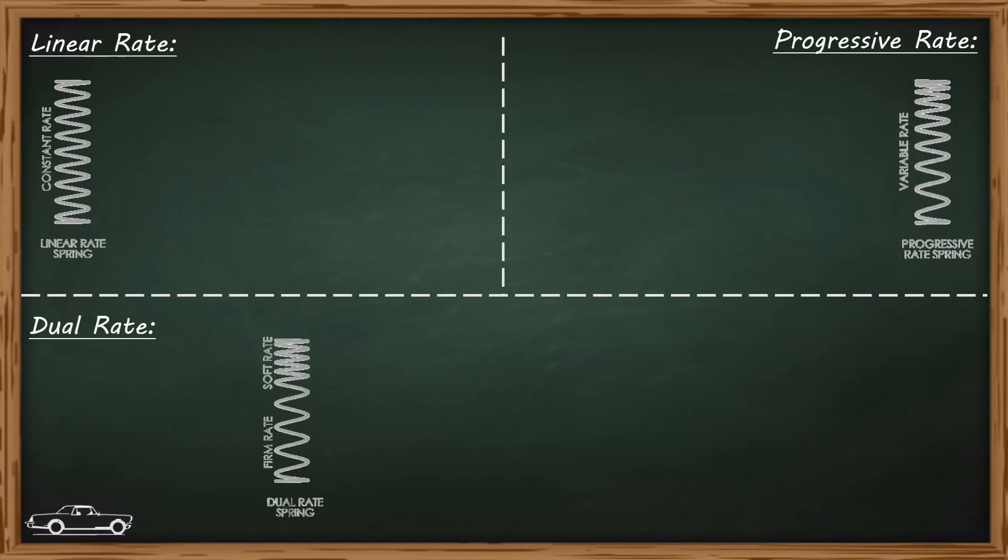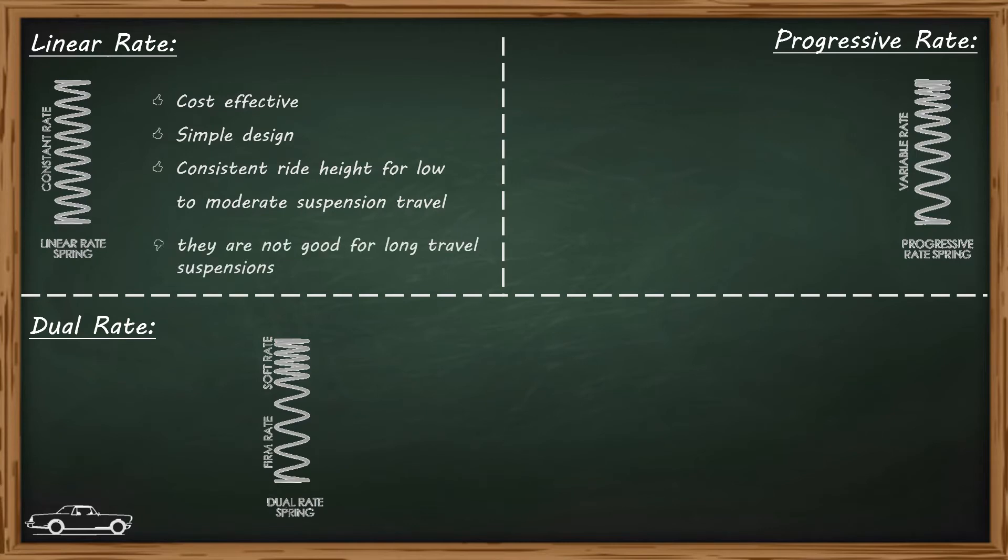Pros of a linear rate spring: it is very simple in terms of its design, also it is very cost effective, it helps to maintain moderate suspension travel. Whereas, the major drawback with this linear rate spring is they do not fit in maintaining or supporting a long travel of the suspension.